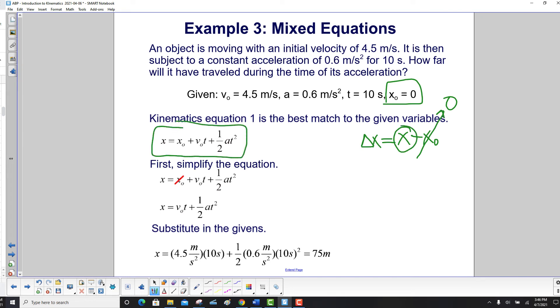The second kinematics equation, where you have a function of time, initial velocity, initial position, and acceleration. So the first thing you do is simplify the equation. X0 is equal to 0, so you drop it out. So x, which is going to represent your displacement, is v0t plus 1 half at squared.